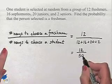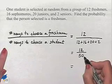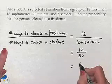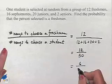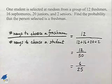And now we want to always reduce. And notice that we can divide both numerator and denominator by 2 as they're both even. So 12 divided by 2 is 6, 50 divided by 2 is 25, and the probability is going to be 6/25.